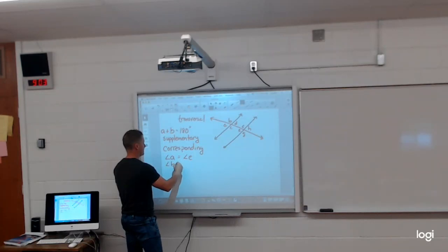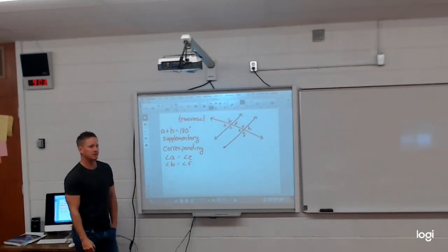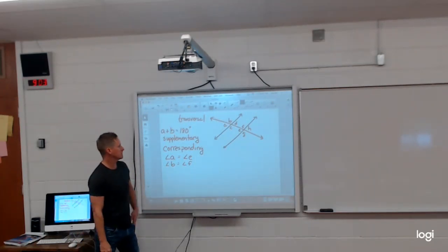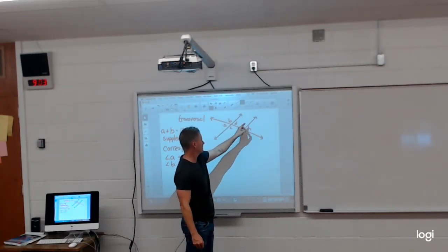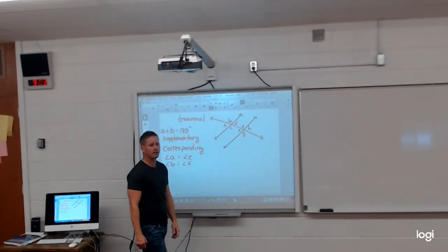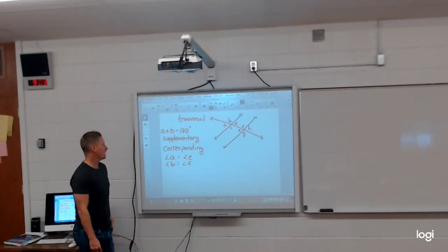Angle B and angle Y, corresponding angles. They're in the exact same position. Top left, top left, top right, top right, bottom left, bottom left, bottom right, bottom right. So we have corresponding angles.